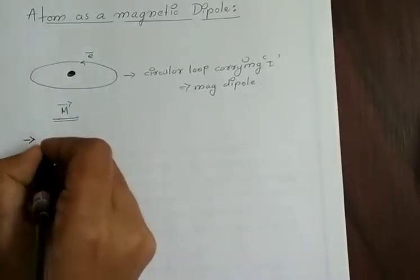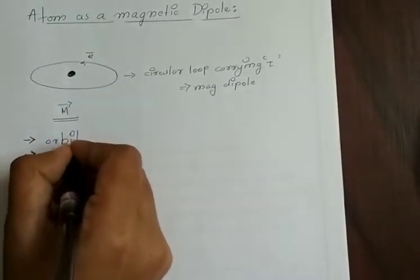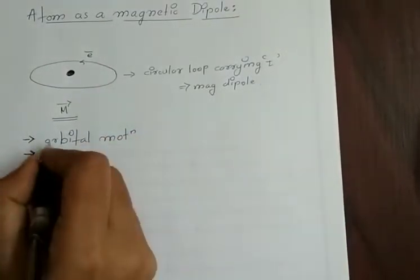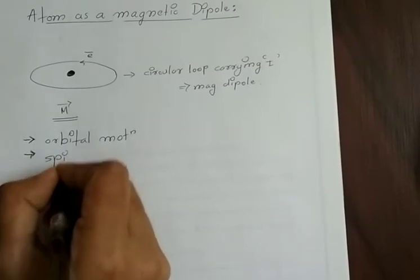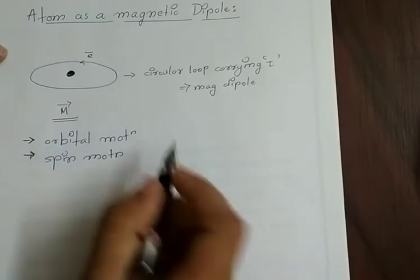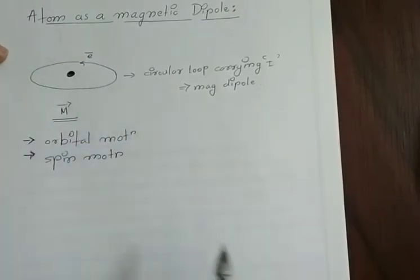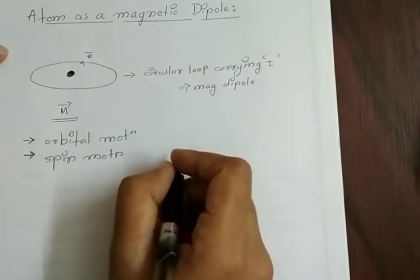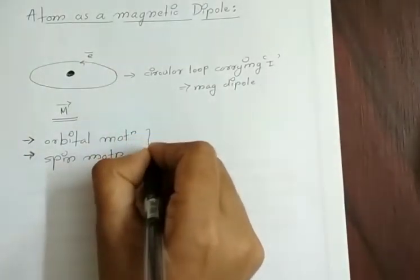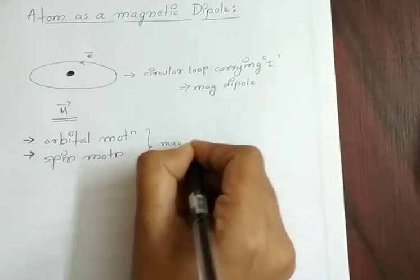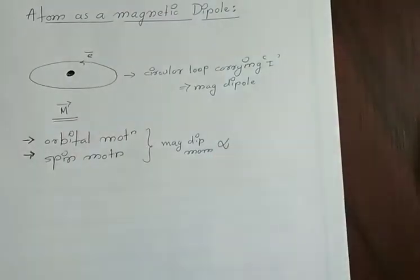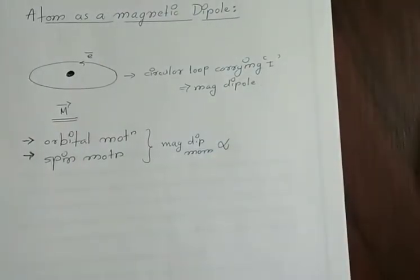One of the motions is the orbital motion of the electron, and the second one is due to the spin motion of the electron. Both of these motions contribute to the magnetic moment of an atom. The magnetic dipole moment of any atom is directly proportional to the angular momentum of the electron.